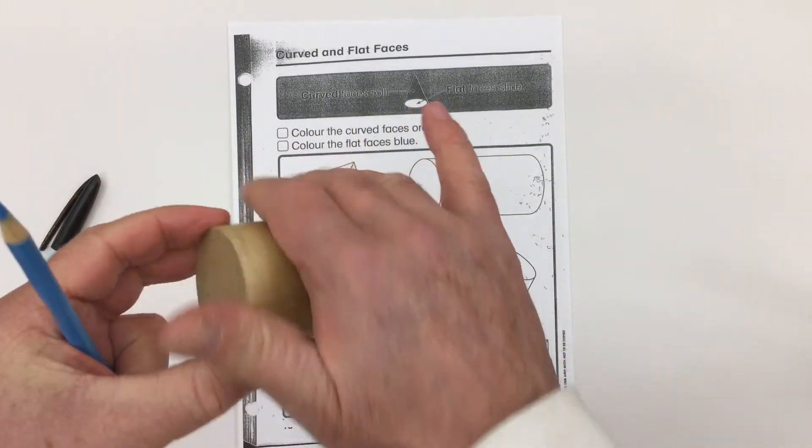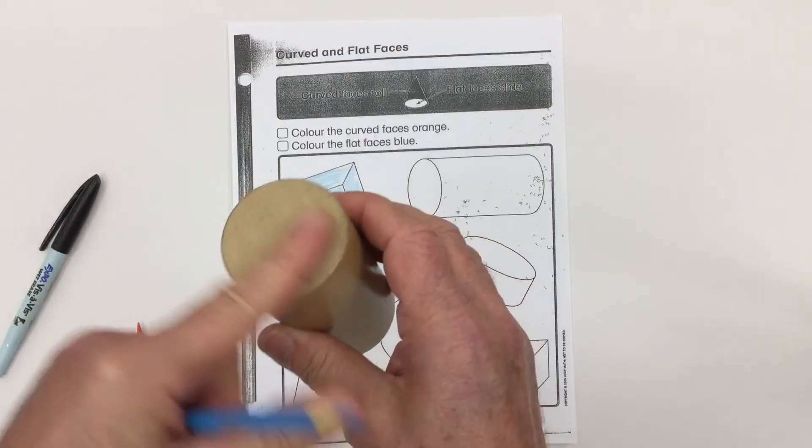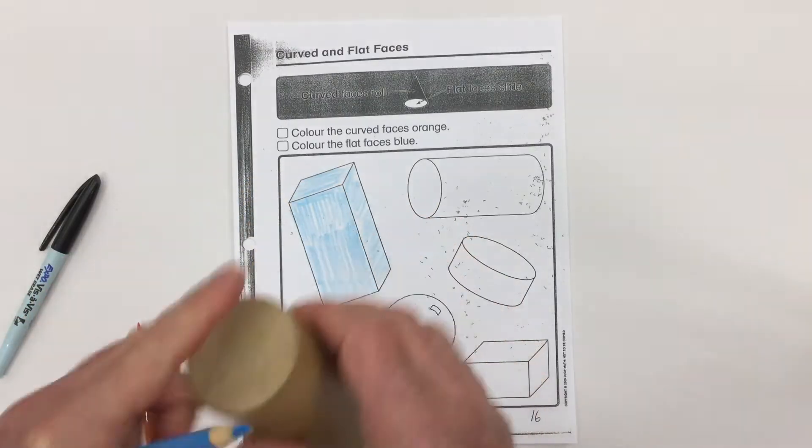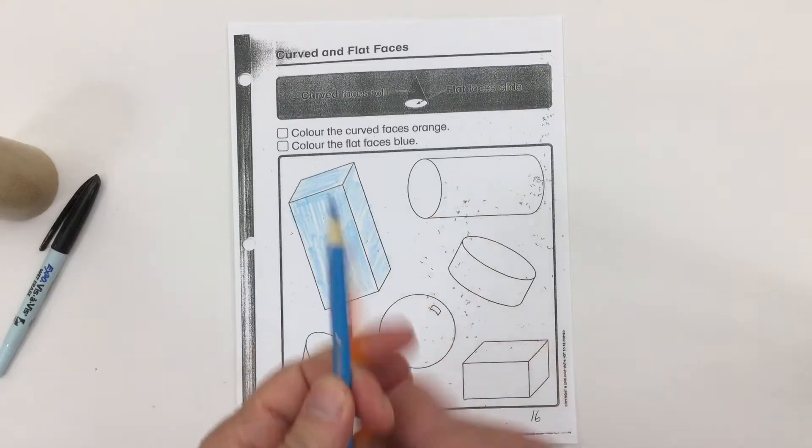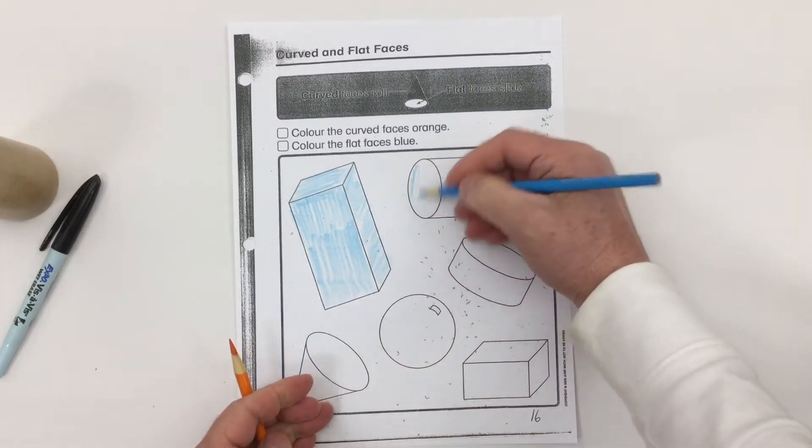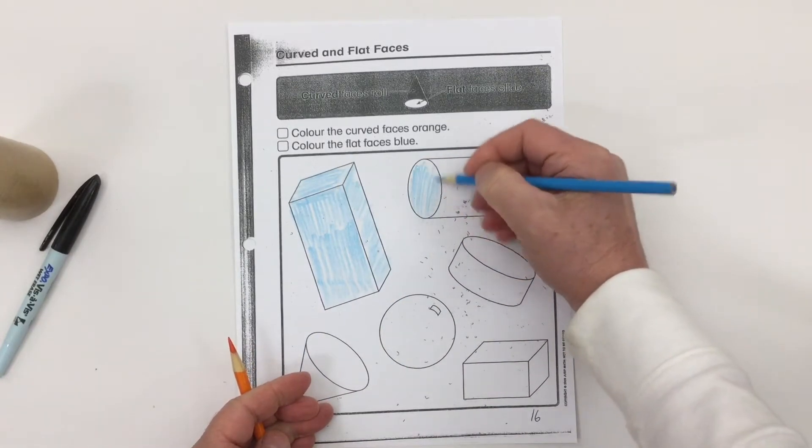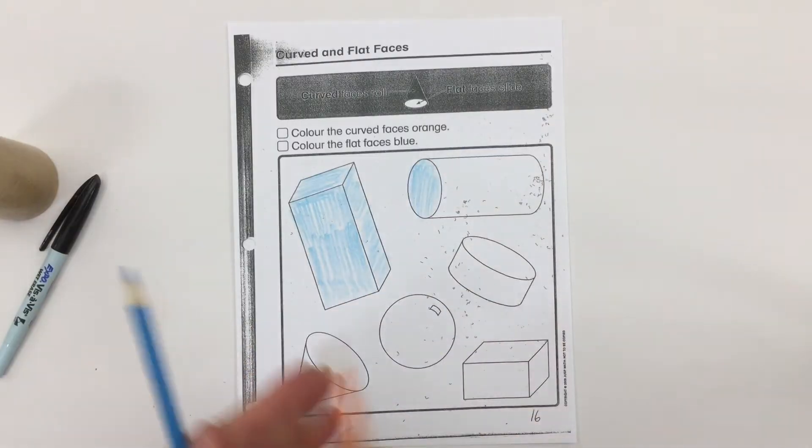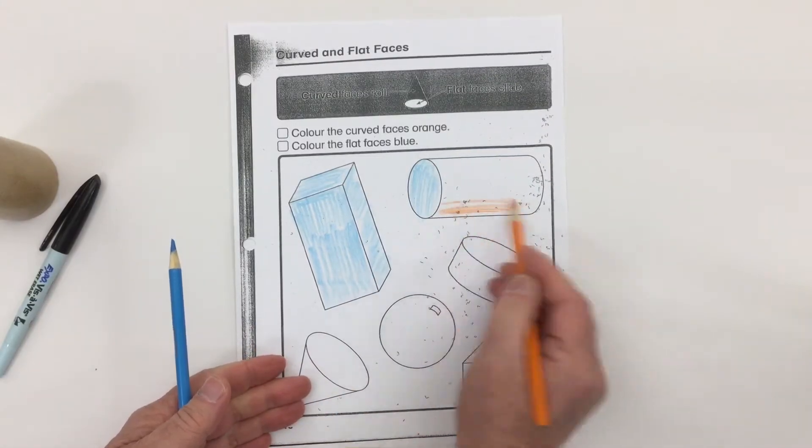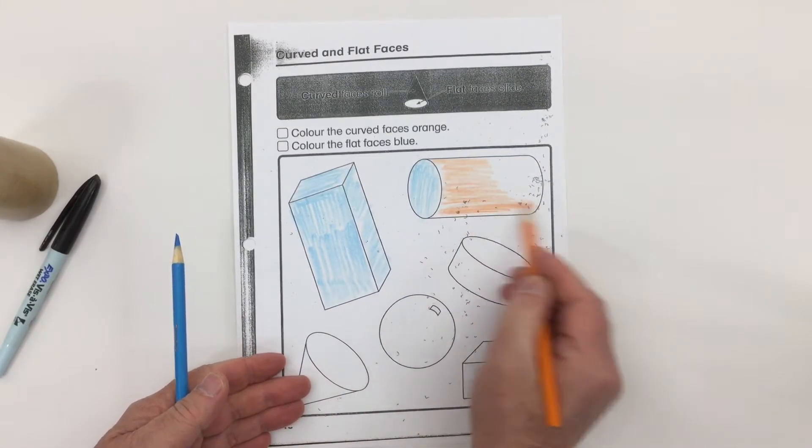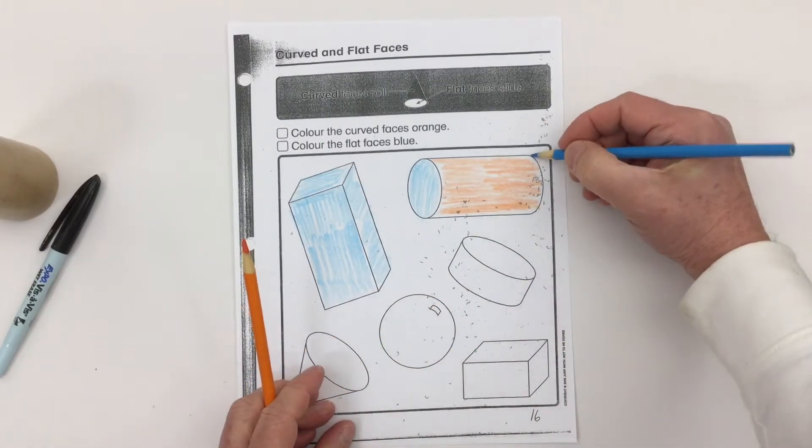We're going to need to color both blue and orange: blue for the flat faces, orange for the curved. Now we know this face over here would be blue as well.